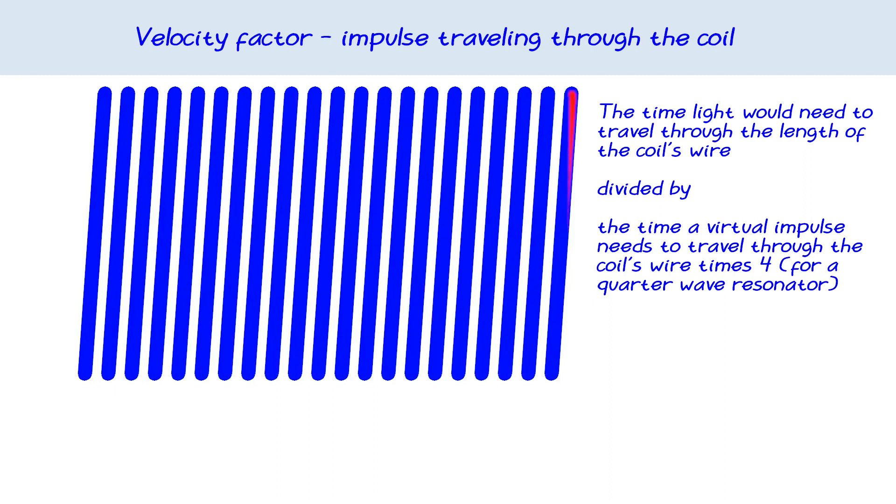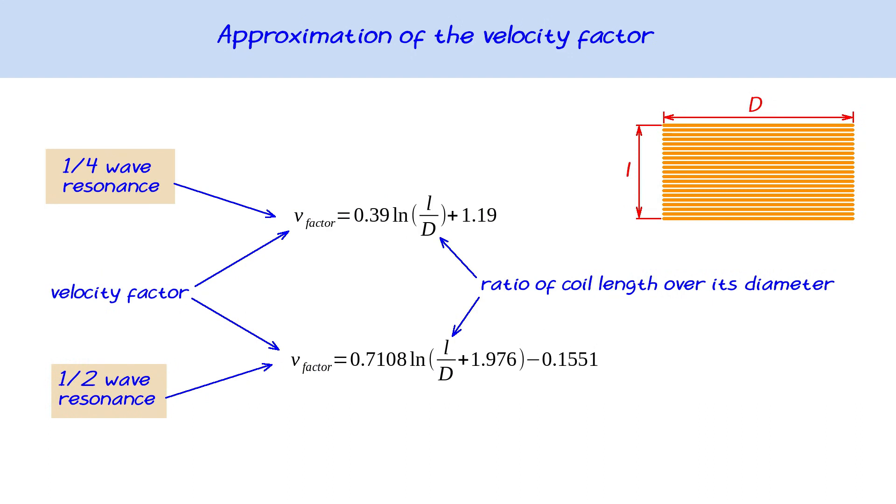Note that it's not an actual impulse, but an apparent impulse. It looks as if. The interesting thing is that this velocity factor depends solely on the ratio of the length of the coil over its diameter. These formulas give a good approximation.